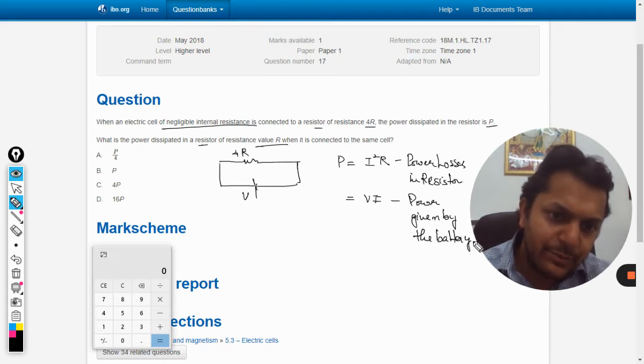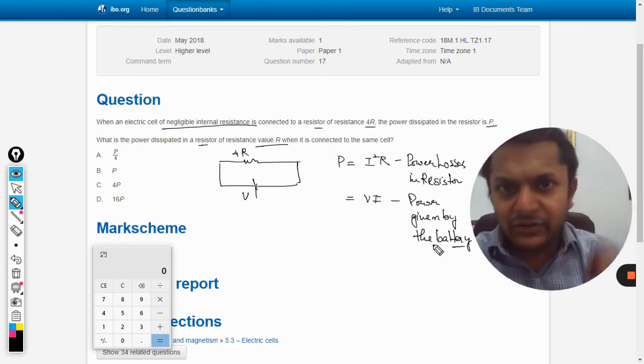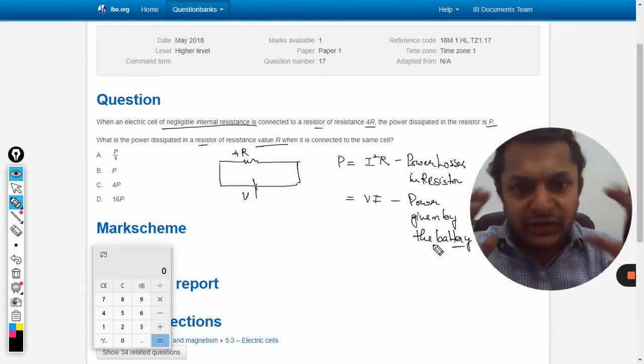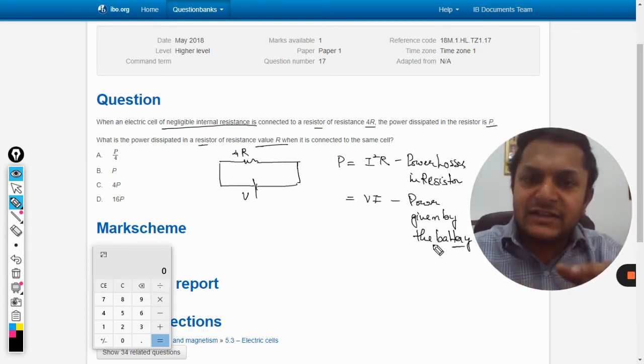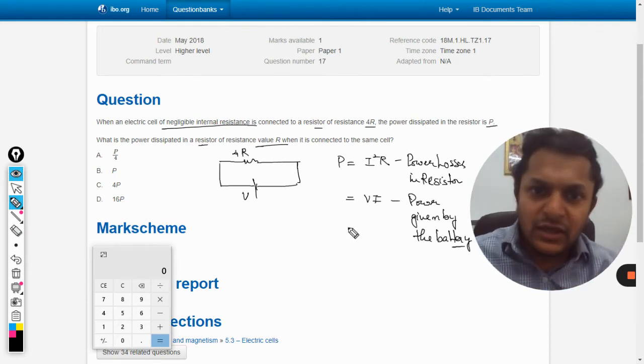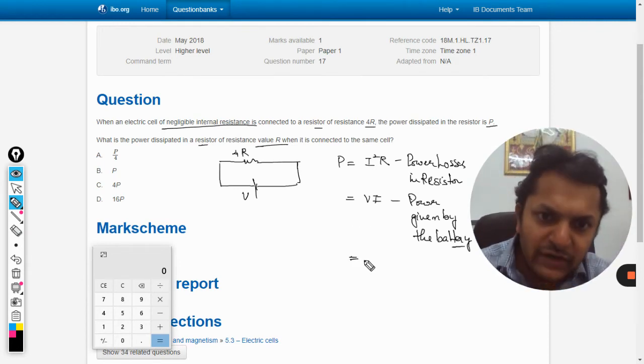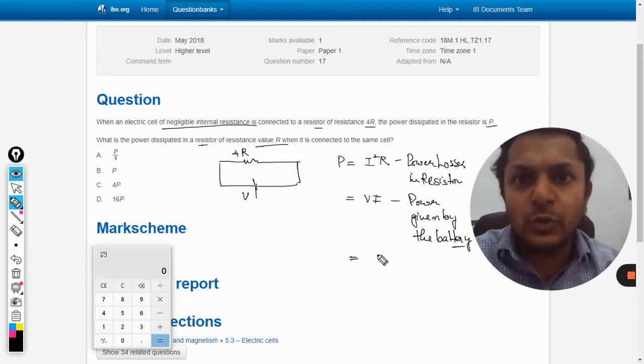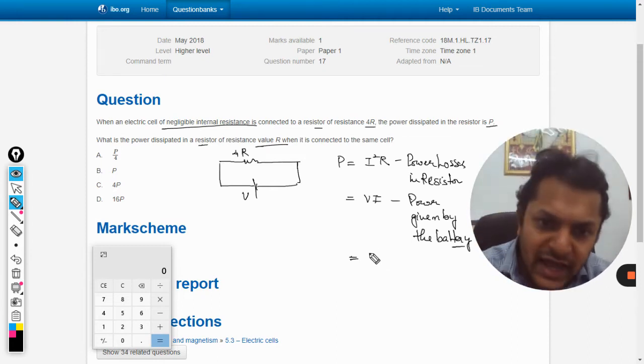Or we can say the power that has been extracted from the battery. The total power as given by the battery will be this if I is the current coming from the battery. Another formula for this: by using V = IR and substituting, we get V²/R.